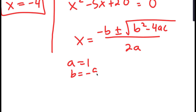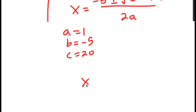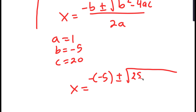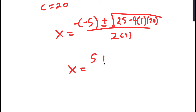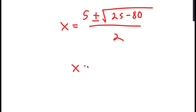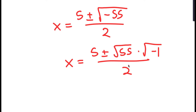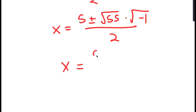In this case, a is 1, b is negative 5, and c is 20. So x equals negative of negative 5, plus or minus the square root of negative 5 squared, which is 25, minus 4 times 1 times 20, all over 2 times 1. This equals 5 plus or minus the square root of 25 minus 80 over 2, which is 5 plus or minus the square root of negative 55 over 2. This equals the square root of 55 times the square root of negative 1 over 2, and since the square root of negative 1 is i, we get 5 plus or minus the square root of 55 times i, all over 2.